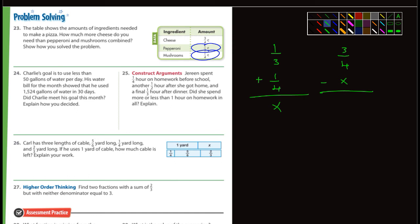All right. You should be able to do number twenty-three then. Twenty-four, Charlie's goal is to use less than fifty gallons of water per day. His water bill for the month showed that he used one thousand five hundred and twenty-four gallons of water in thirty days. Wow. That seems like an awful lot. I actually don't know how many gallons of water I use in a month. Did Charlie meet his goal this month? Explain how he decided.